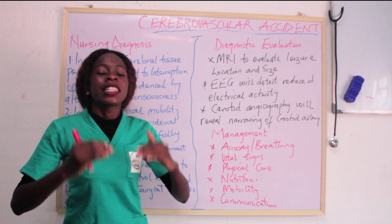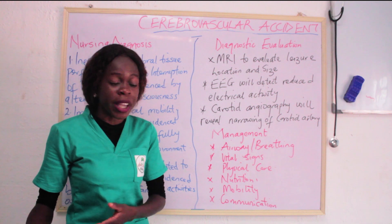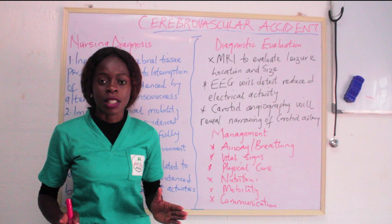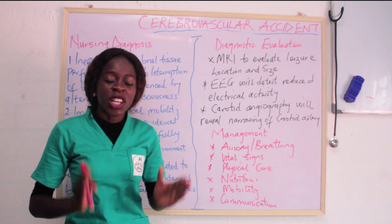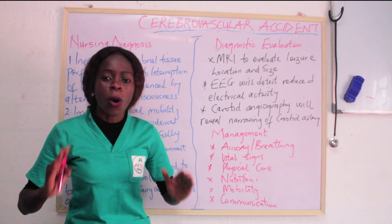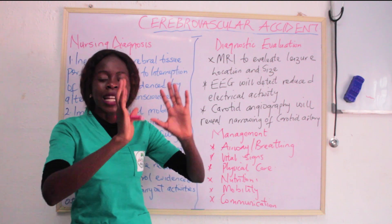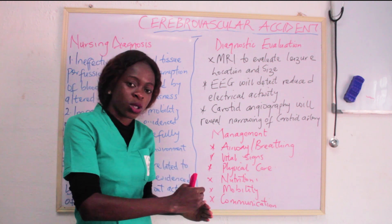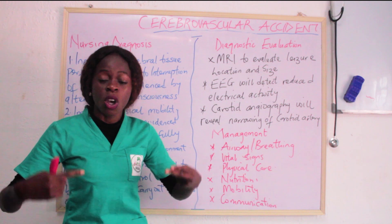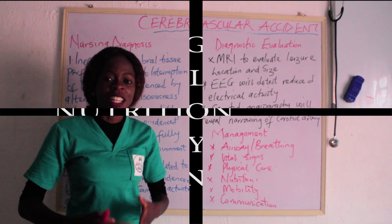In terms of management, it depends on the signs and symptoms and clinical manifestation the patient is portraying. As a nurse, the first step is to carry out a thorough assessment. In order of priority, check the patient's breathing pattern — ensure the airway is clear, with no mucus or secretions, and that the patient is breathing properly. If not, your responsibility is to clear and maintain the airway. Then take note of vital signs: pulse rate, respiration rate, and blood pressure. Assess the neurological status and level of consciousness.